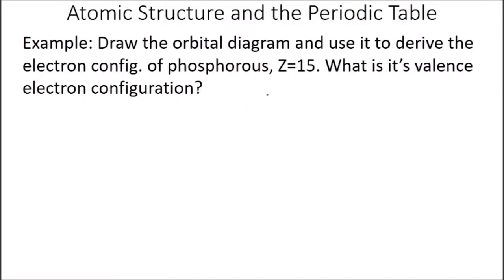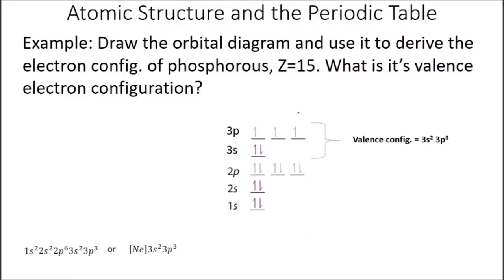Example: draw the orbital diagram and derive the electron configuration for phosphorus (Z equals 15). The valence configuration is 3s2, 3p3. We get that by building up the periodic table, making sure not to violate the Pauli exclusion principle and making sure the 3p electrons fill with spins parallel before pairing up.